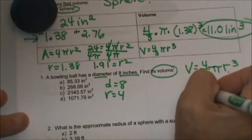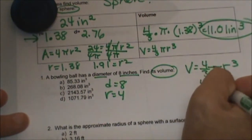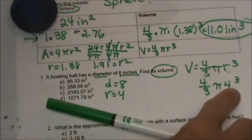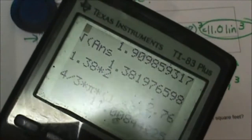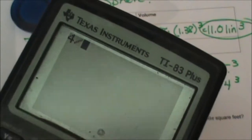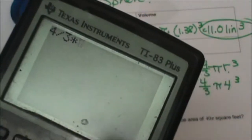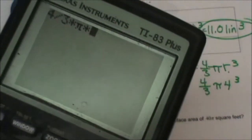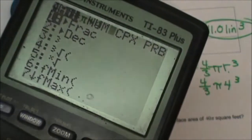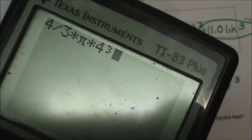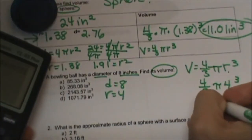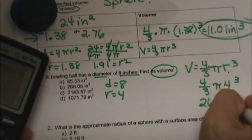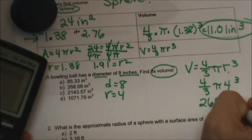So I'm going to plug in 4 and the biggest mistake students make is they forget to cube that. Let's get our calculator and we're going to do 4/3 times π times 4 to the 3rd, which is our cube button. This is what it should look like and you get 268.08 and this would be in inches cubed.